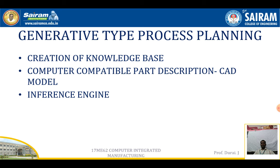The three components of generative type process planning are: first, creation of knowledge base; second, computer-compatible part description or CAD model; and third, inference engine. The knowledge base acts like a database system containing technical knowledge about a particular component. Technical knowledge about manufacturing and logic developed by expert human planners is coded and loaded into a computer, forming the knowledge base for the generative type system.